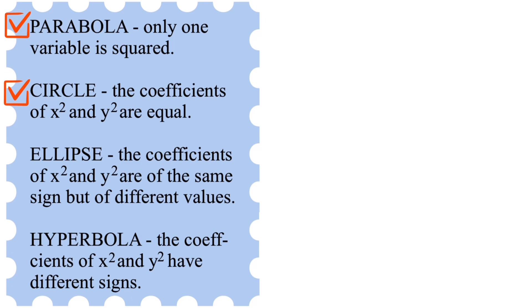It's going to be an ellipse if the coefficients of x² and y² are of the same sign but of different values. And it's going to be a hyperbola if the coefficients of both x² and y² have different signs — meaning one is positive and the other is negative.